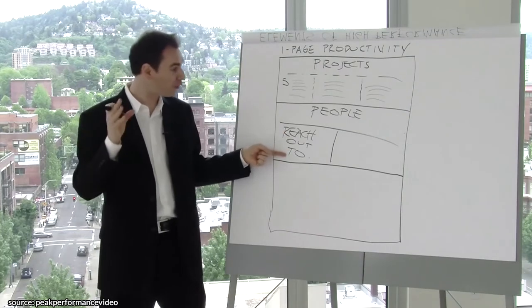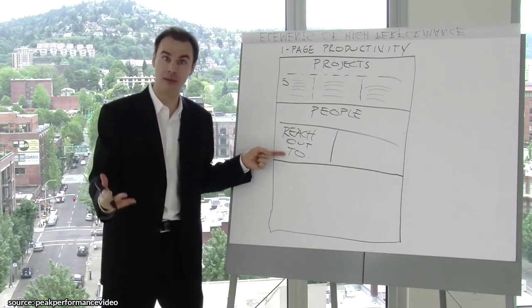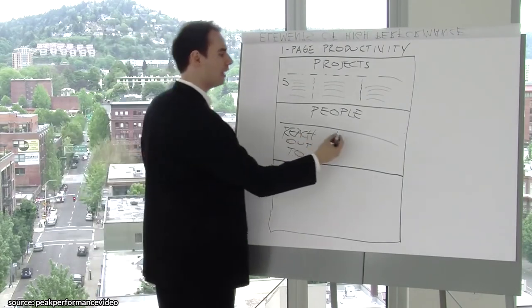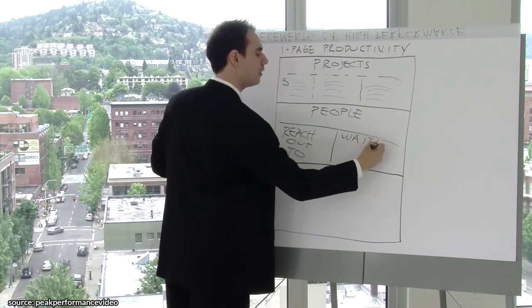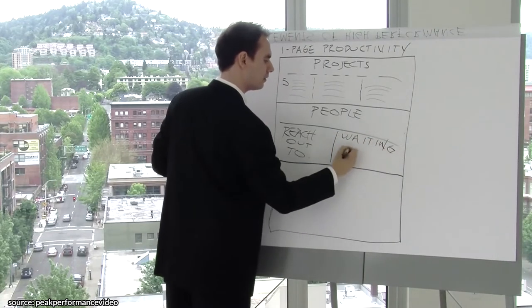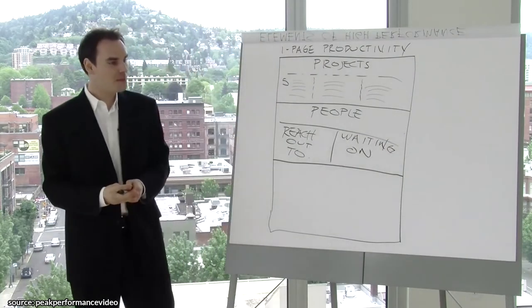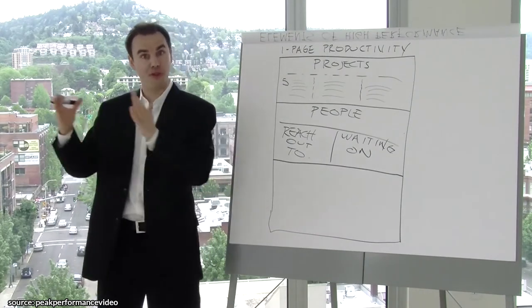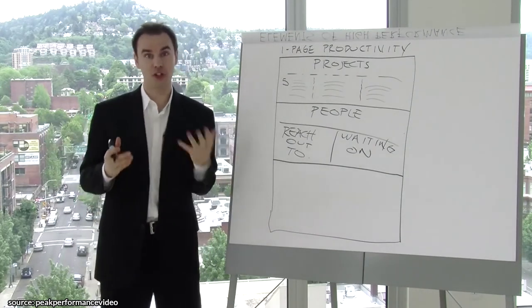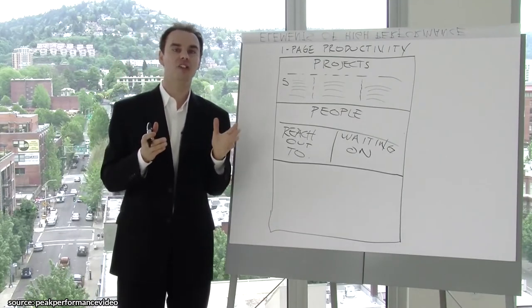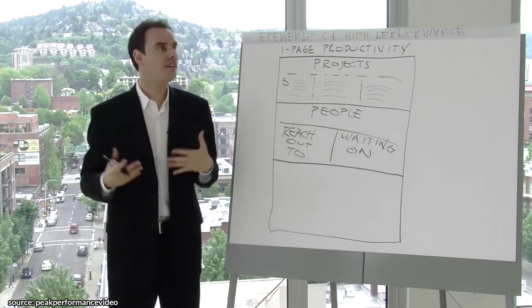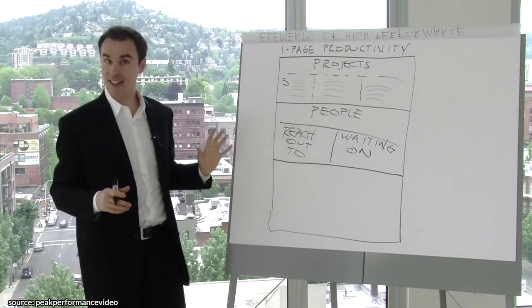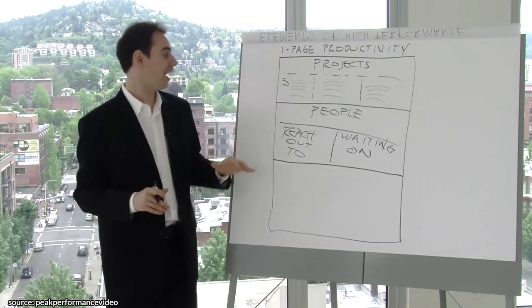The second category here is the people that you are waiting on. Given any person's real schedule, you're waiting on somebody to give you some information or a decision to move forward in your day. You're waiting on something from somebody so that you can move forward.